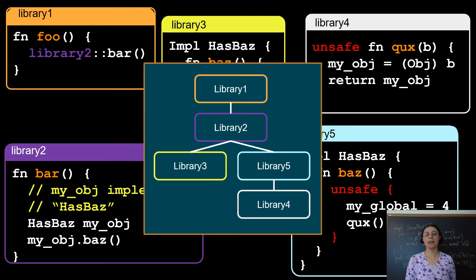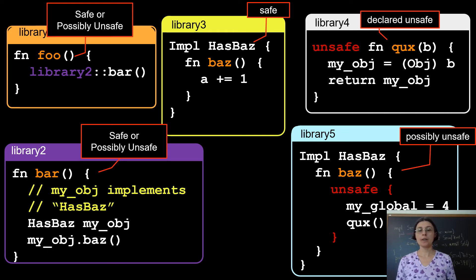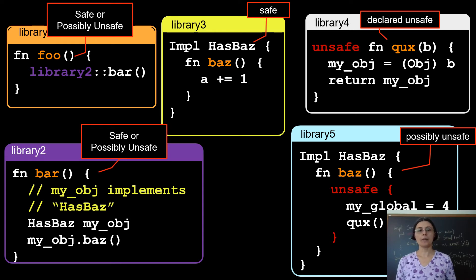There are only a couple of lines we need to trace down and understand. To analyze the safety of all functions in the example, we start with the end of the call chain. The function cooks in Library4 is declared unsafe — the programmer plans to use unsafe operations inside. Library5 contains function buzz, which is possibly unsafe. From the outside it looks perfectly safe, but it does use an unsafe code block inside, calling an unsafe function. In Library2, function bar can be safe or possibly unsafe depending on whether it calls buzz from Library3 or from Library5, and that in turn makes function 4 of Library1 safe or possibly unsafe.